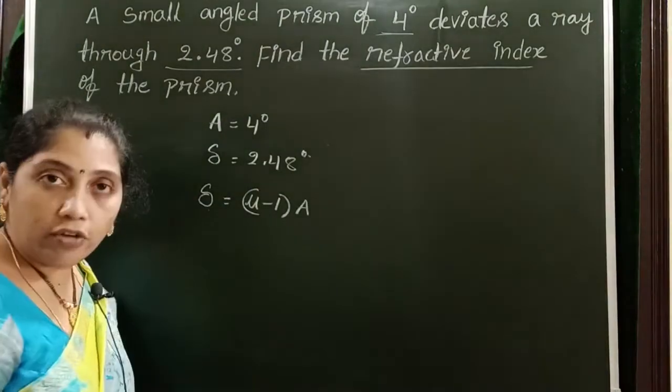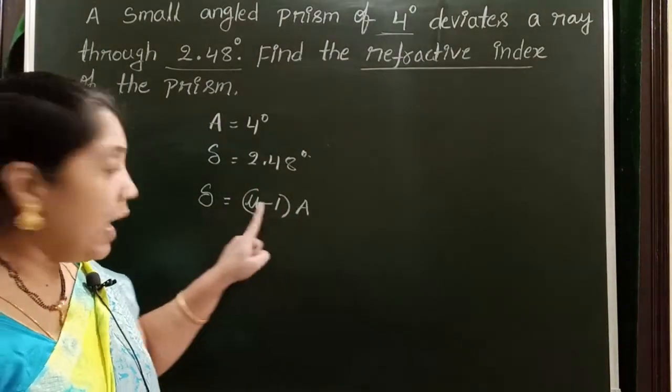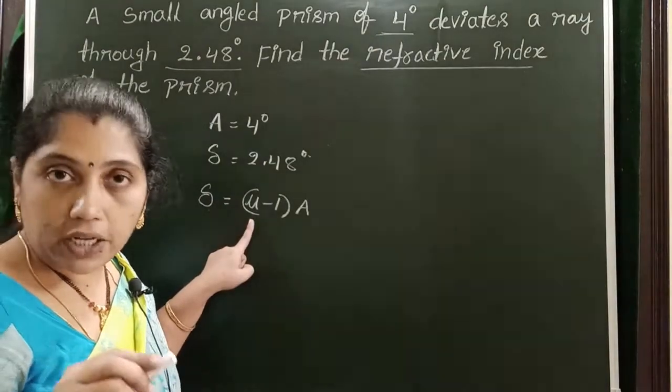Where delta is angle of deviation, A is angle of prism, and mu is the refractive index.